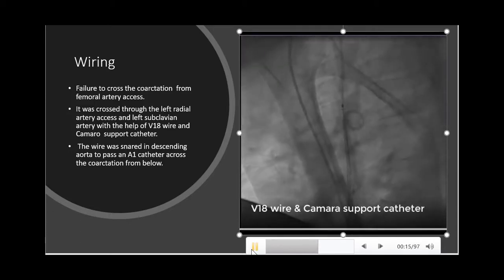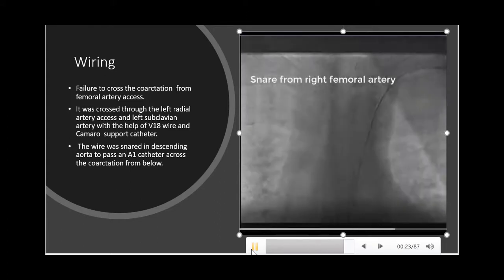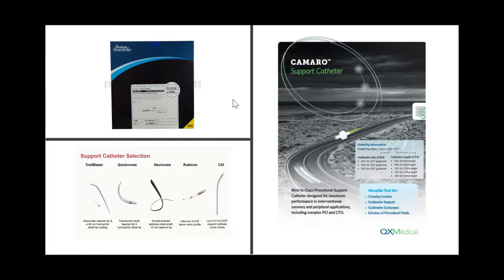After that, the V18 wire was snared from the descending aorta to the right femoral artery. In this case, we used the V18 guide wire to pass the lesion, which is an 0.018 peripheral guide wire. There are many different support catheters available when applying 0.035 or 0.018 guide wires. We applied a coronary support catheter in this case.